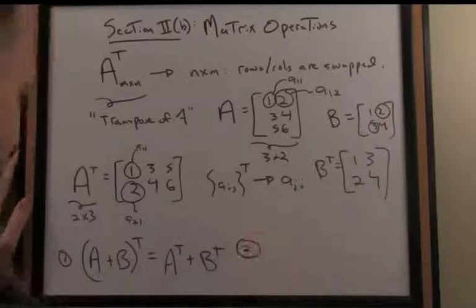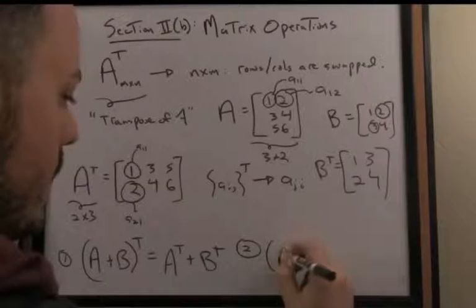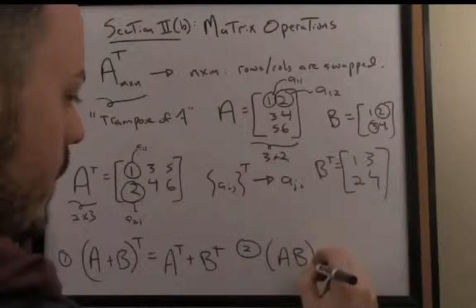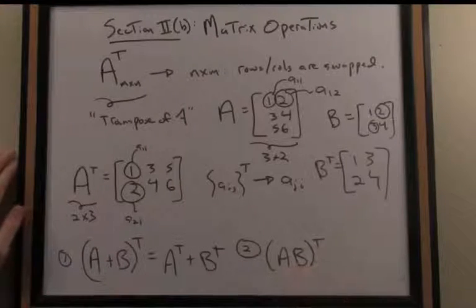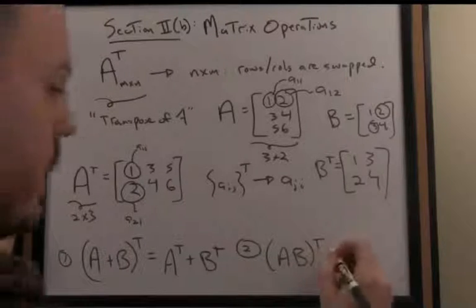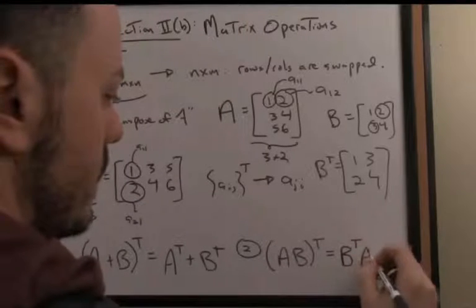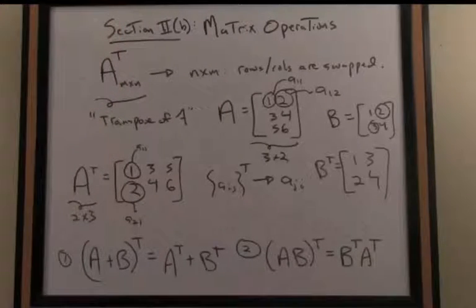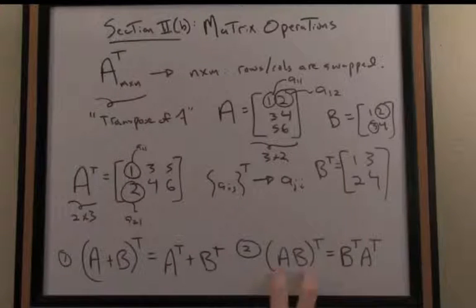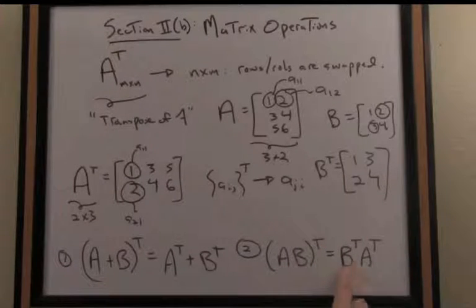The second common property: if I take the product of two matrices AB and apply the transpose, be careful—we flip the order of multiplication. So (AB)^T equals B^T A^T.